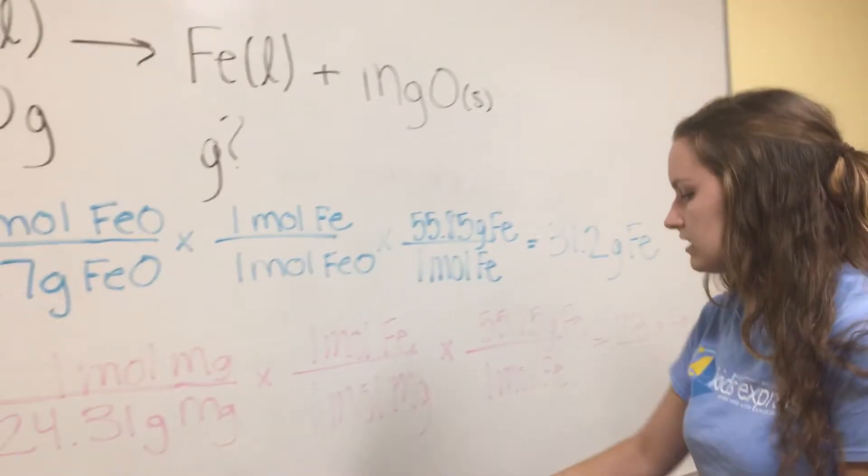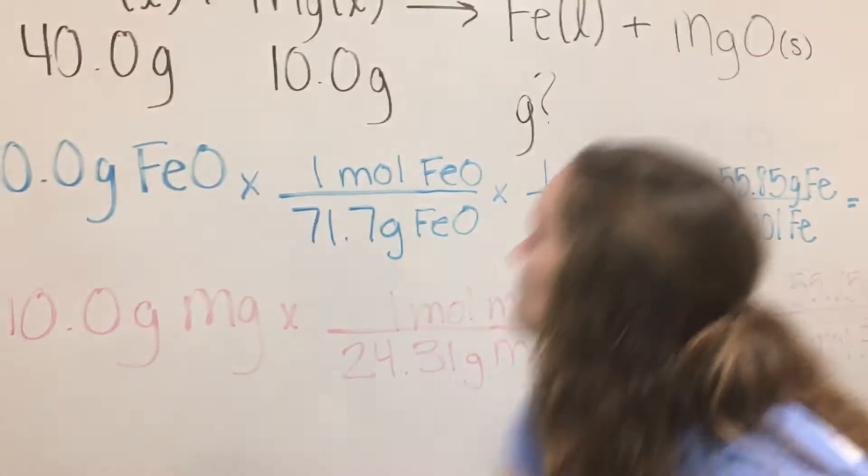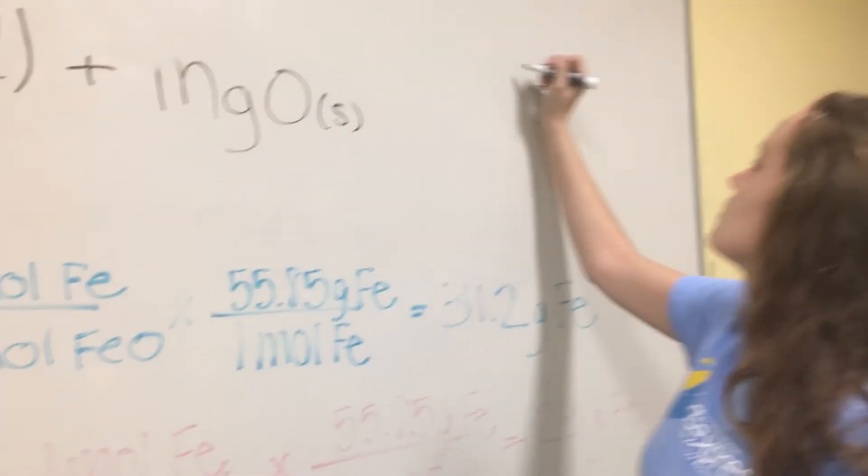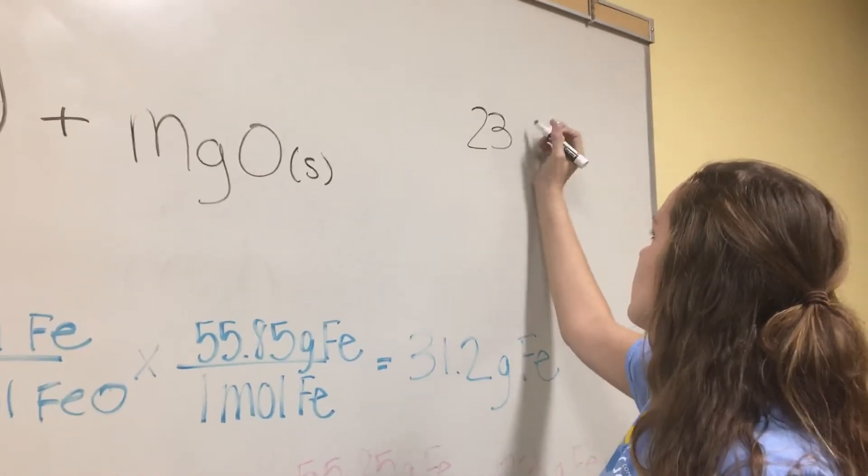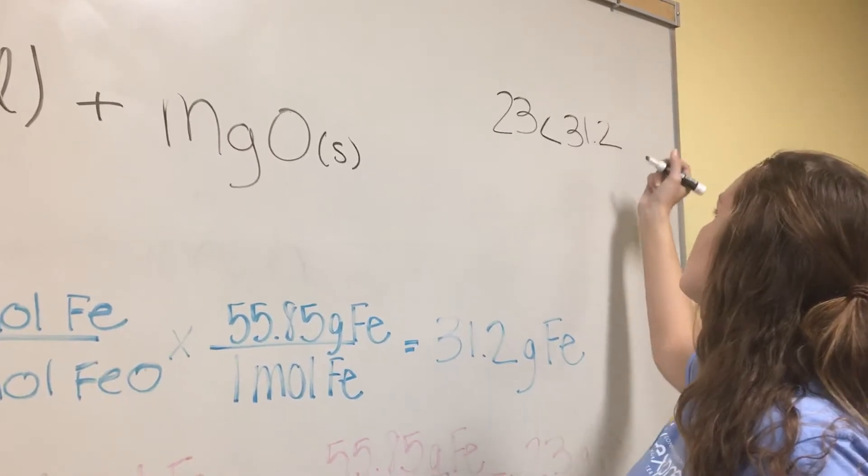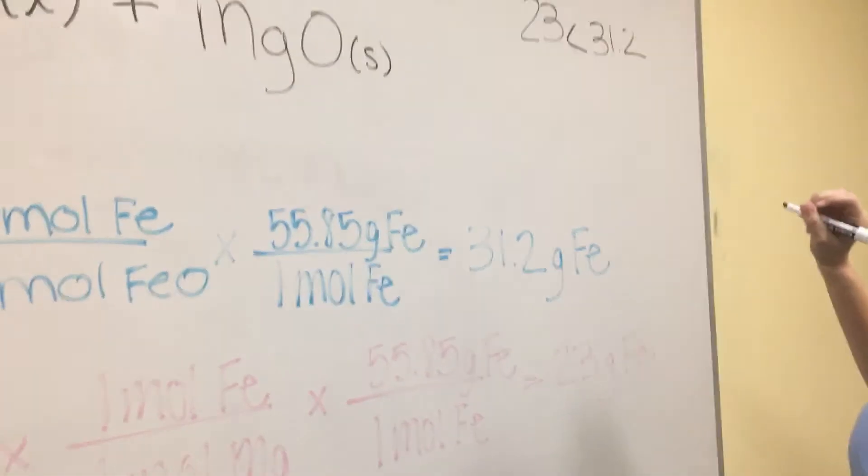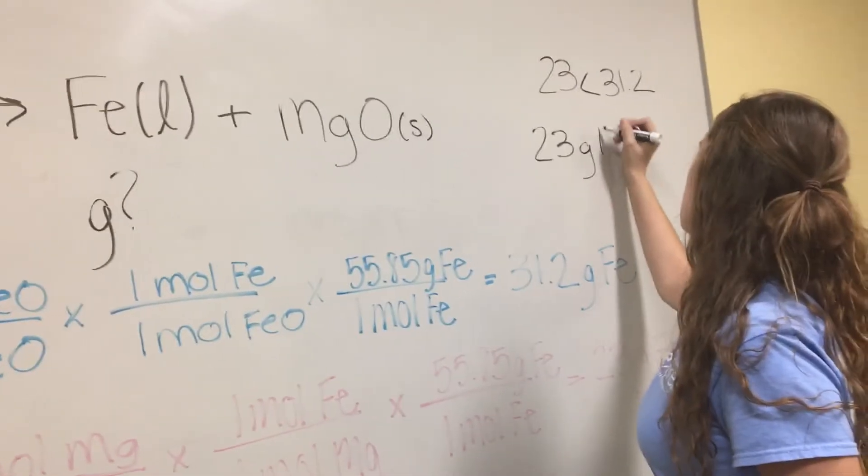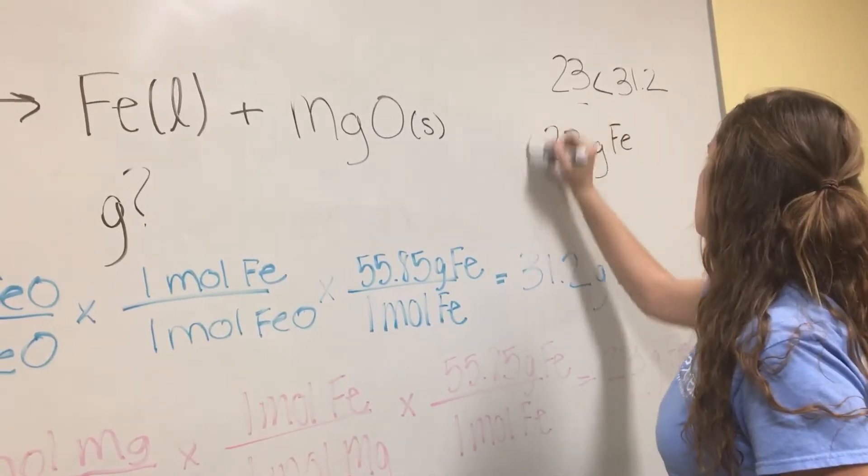So, to find the limiting reagent, because we use the 23 grams first, the 23 is less than 31.2, which means that 23 grams of Fe is our limiting reagent. Thank you.